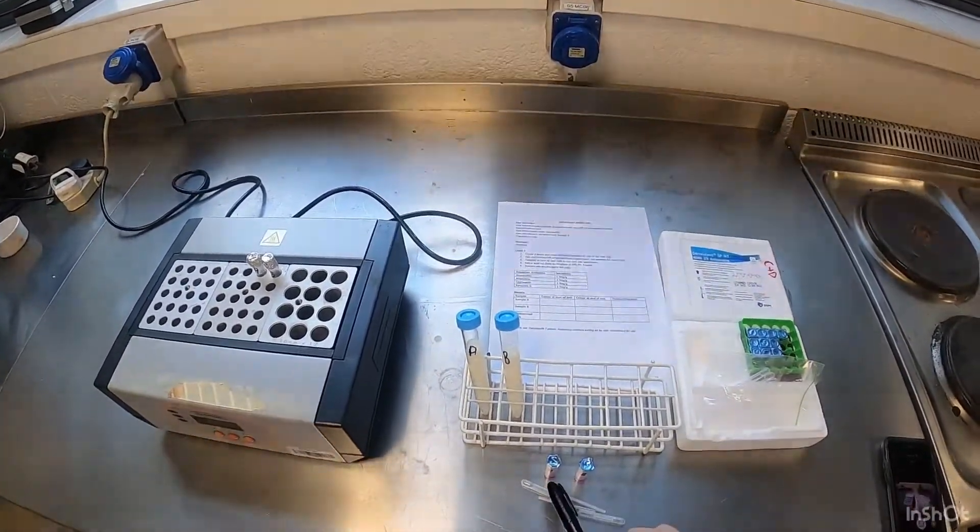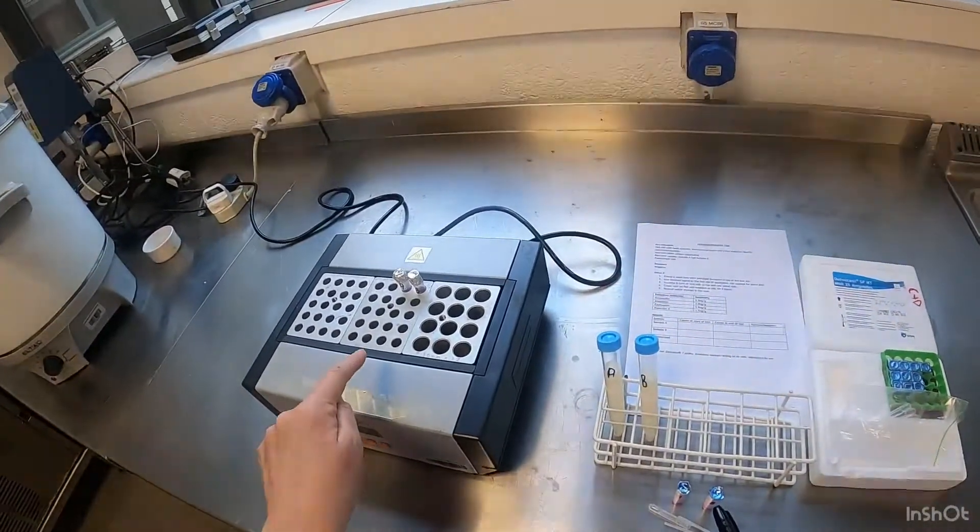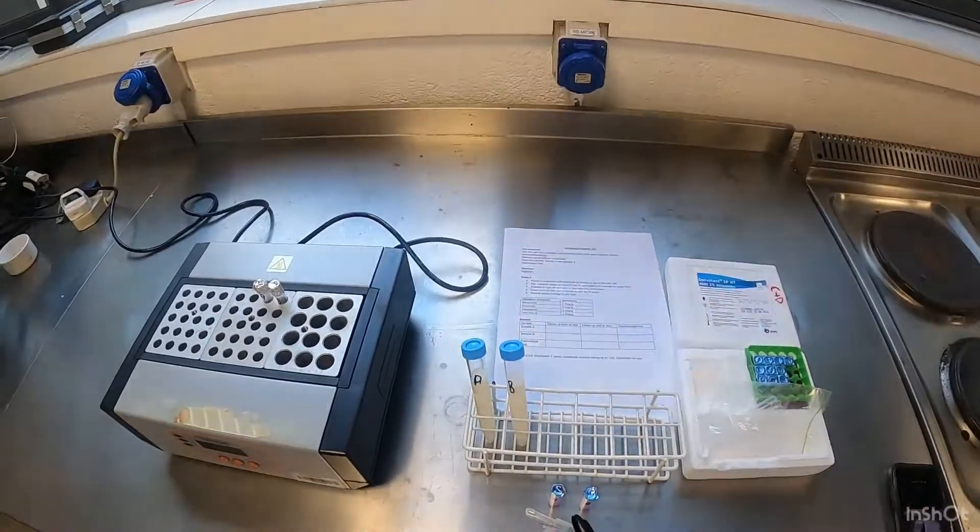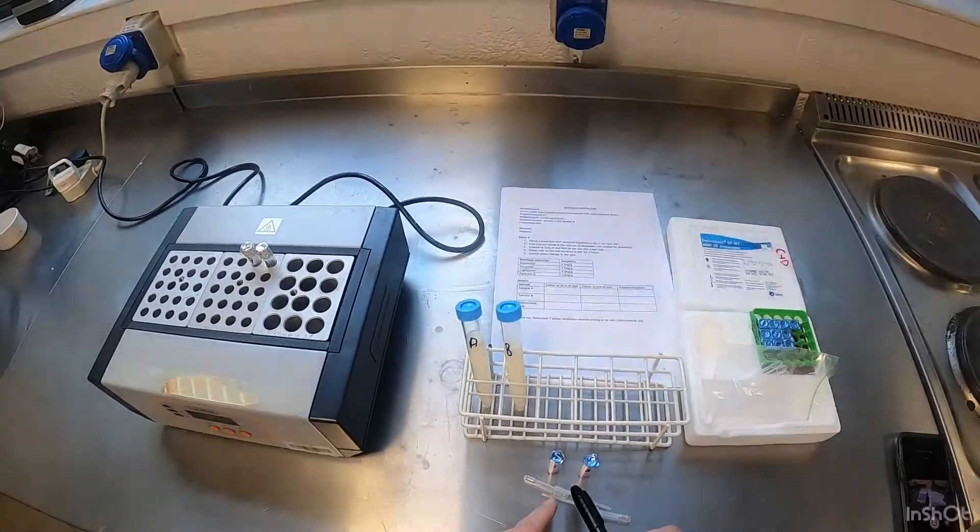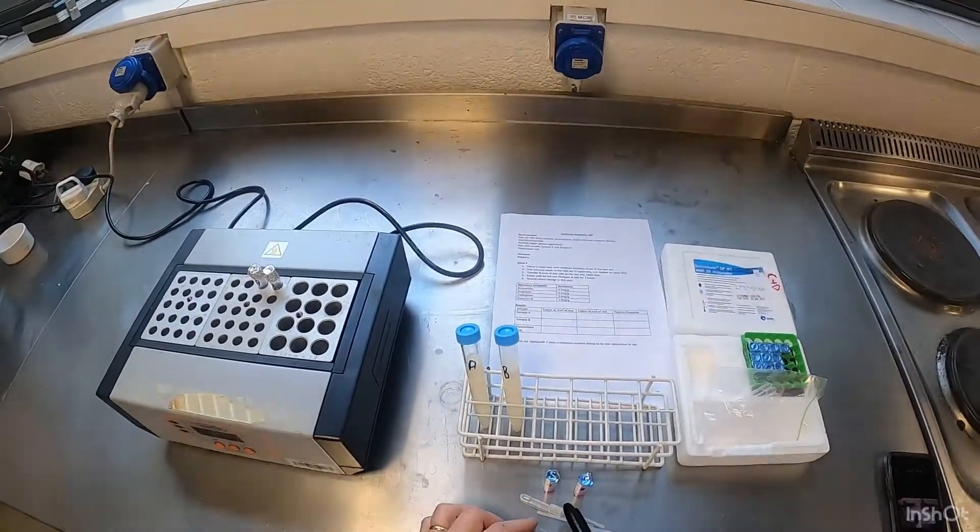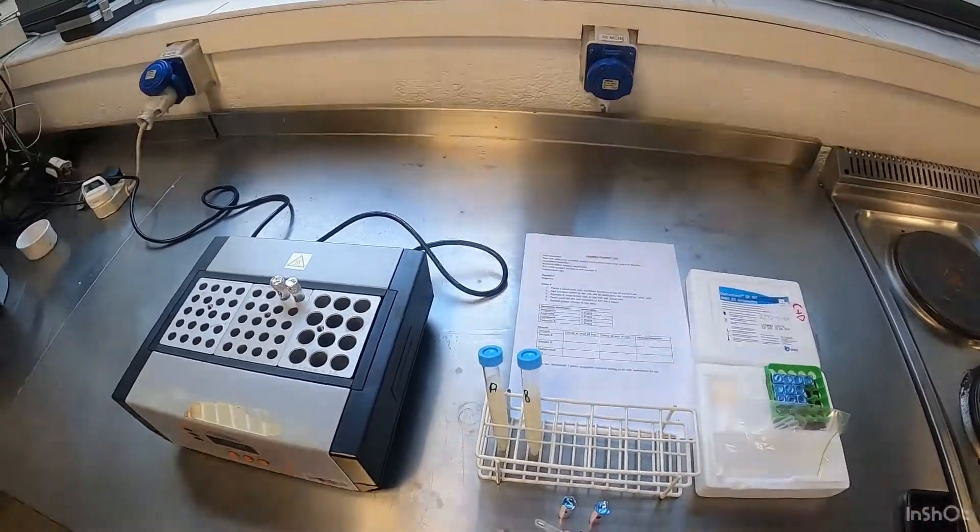So there's a bacteria growing in this and when we put it into the heating block here it should grow. However, if there's an antibiotic present in this sample of milk, then it will stop the bacteria from growing. And it all comes down to a colour.